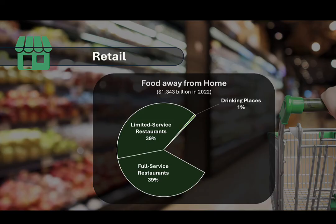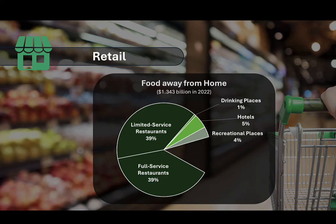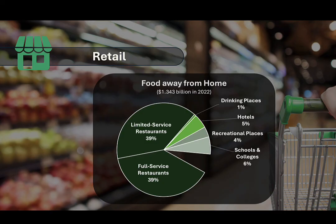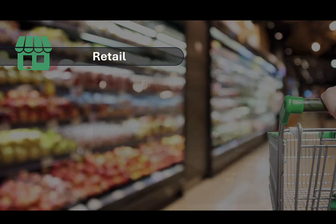Drinking places like bars, pubs, lounges, and nightclubs are generally engaged in preparing and selling alcoholic beverages for immediate consumption, and generally serve limited food items, comprising about 1 percent of food eaten away from home. Food service provided by hotels represents about 5 percent of food away from home. Recreational places comprise about 4 percent, including amusement parks like Disneyland and Six Flags, concession stands at sports stadiums, and food courts at movie theaters. Schools and colleges serve about 6 percent of the meals eaten away from home, including cafeterias in K-12 schools, college dining halls, and on-campus food courts. All other sources — ranging from food trucks to vending machines to catered events — comprise about 6 percent of food eaten away from home.